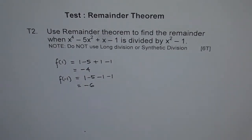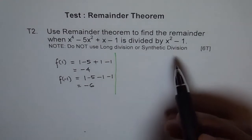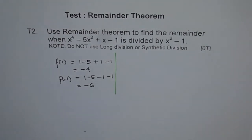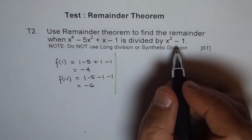One more thing to note: since we are dividing by x squared minus 1, remainder can maximum be like a linear number. So let us assume that our remainder is ax plus b.